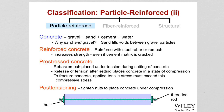Another example is concrete, which is composed of cement — the matrix — and sand and gravel particles. Both matrix and dispersed phases are ceramic here. There is also reinforced concrete, where the strength may be increased by additional reinforcement, usually accomplished by means of steel rods, wires, bars, or mesh embedded into the fresh and uncured concrete.